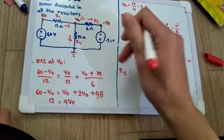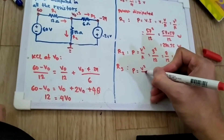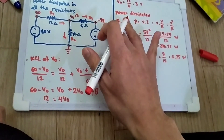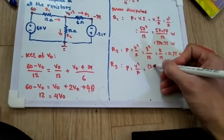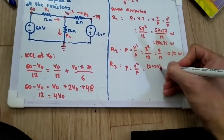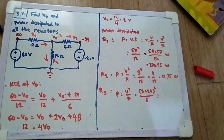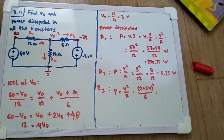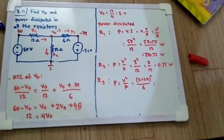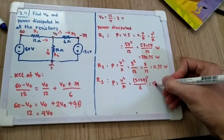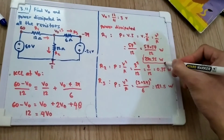For R3, P equals V squared over R. The voltage difference is V0 minus (minus 24), which becomes 3 plus 24 equals 27V. So P_R3 equals 27 squared divided by 6. Calculating this gives 121.5 watts.